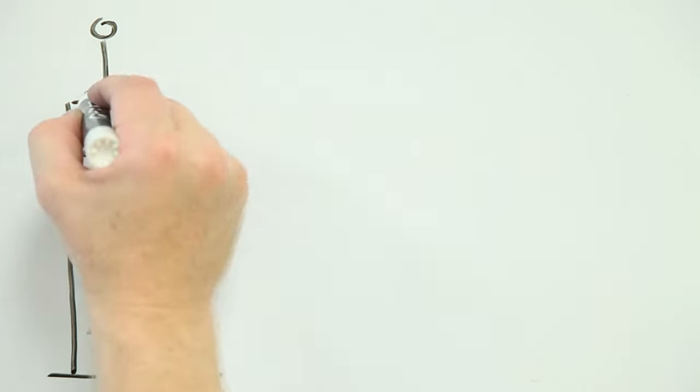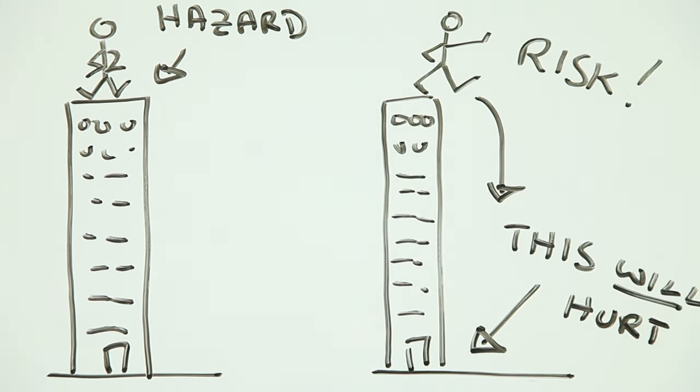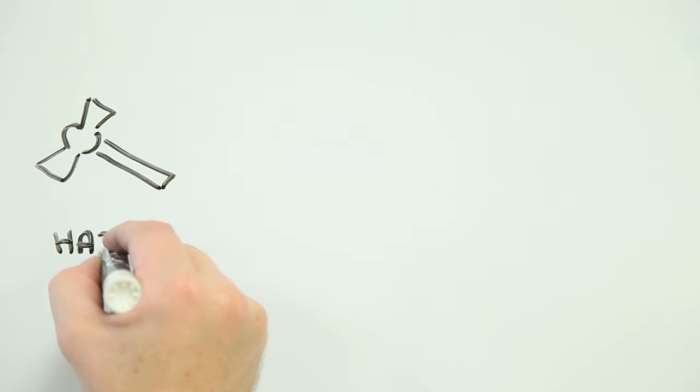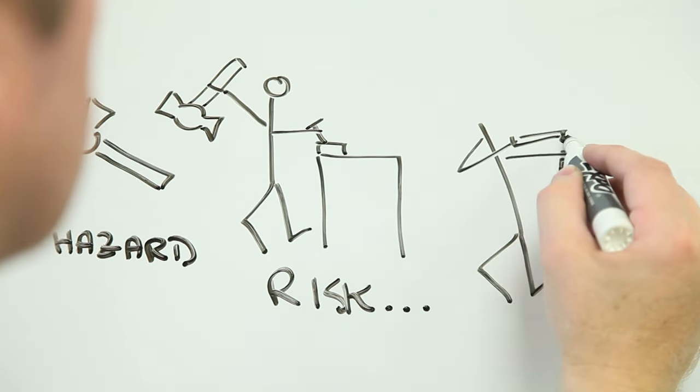Standing on the edge of a tall building is hazardous. Stepping off the edge is a risk. A hammer sitting on a workbench is a hazard. Using it is a risk, especially if you're cack-handed.